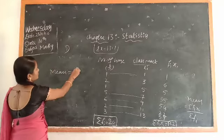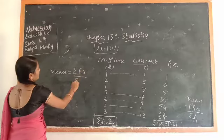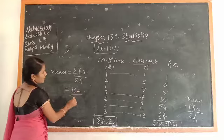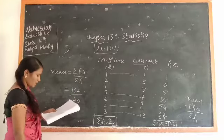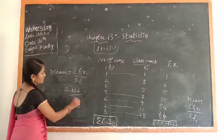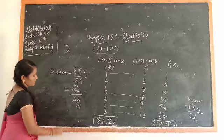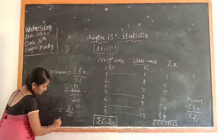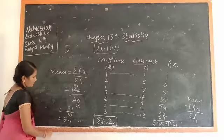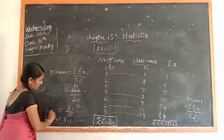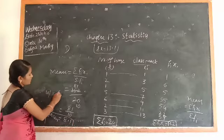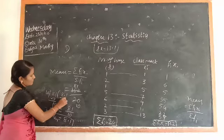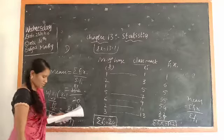Mean is equal to sigma fi xi divided by sigma fi. Here 162 by 20. 162 by 20, take 2 tens, 16 to 81 by 10. 81 by 10 here we know is 8.1. Mean is 8.1.